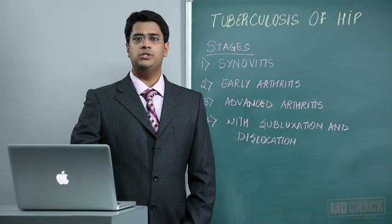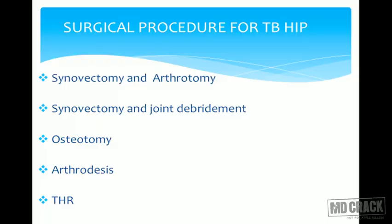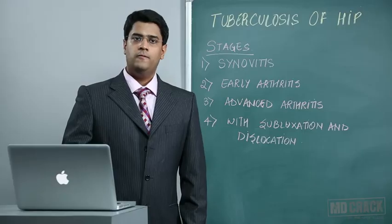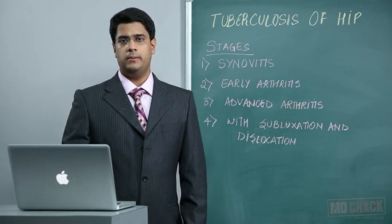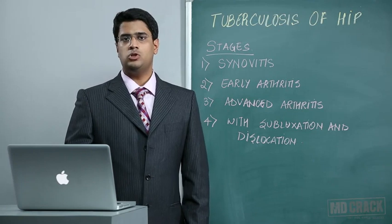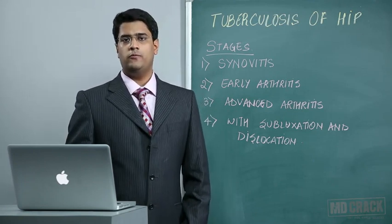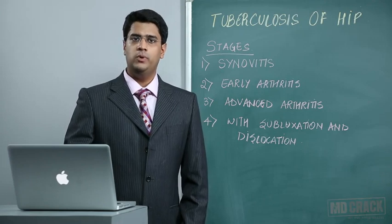The surgical procedures for tuberculosis hip include: synovectomy and arthrotomy, where the hypertrophied synovium is removed; synovectomy with joint debridement, removing infected soft tissues; osteotomy to achieve a good limb position; arthrodesis — that is, fusion — especially recommended in younger patients; and total hip replacement, which can be tried with care. Throughout all these procedures, chemotherapy must be continued regularly.